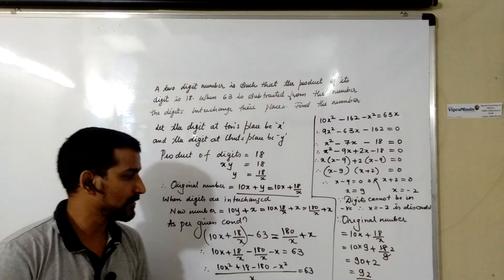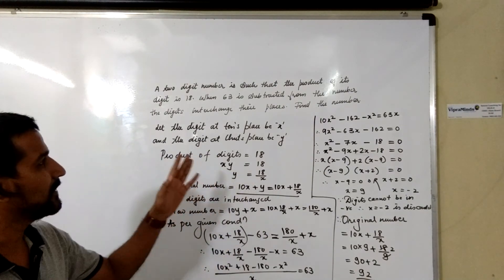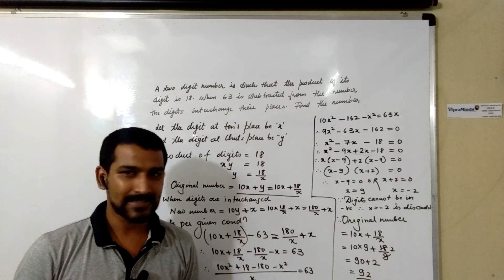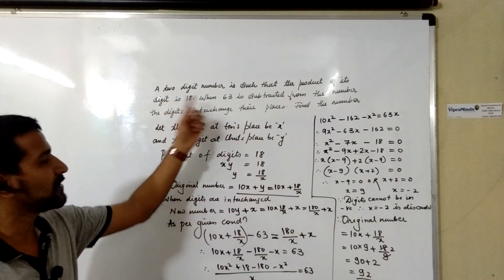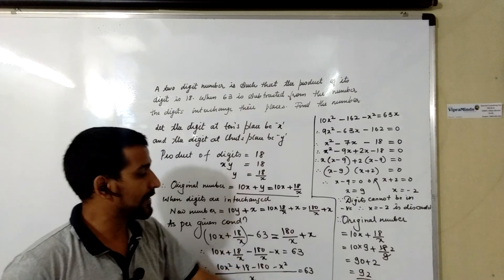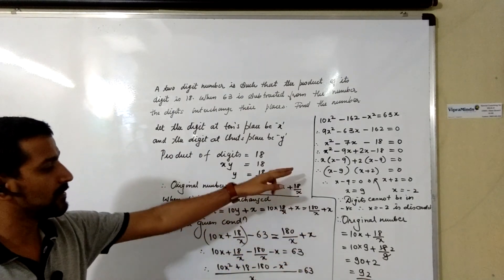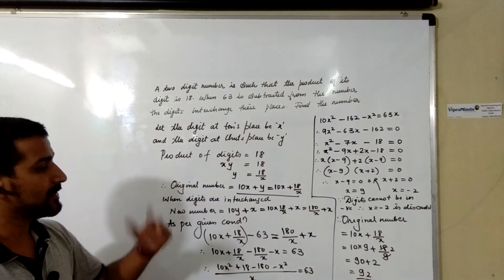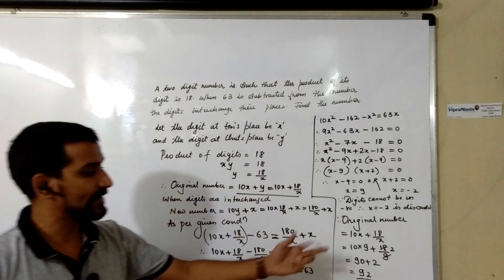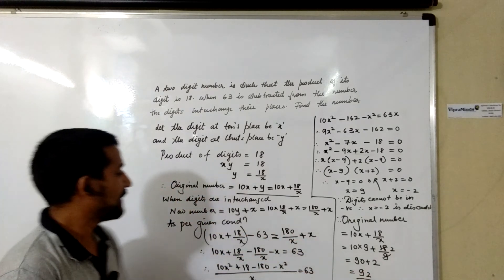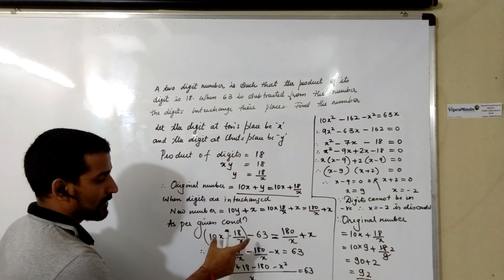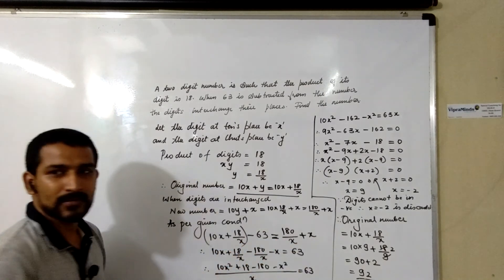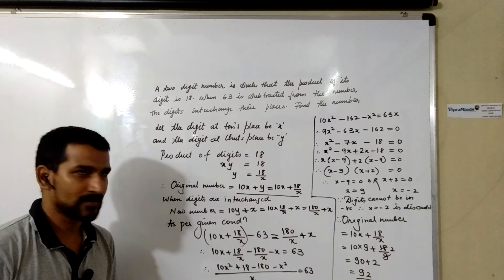This is the two-digit number that satisfies the conditions. The product of the digits: 9 × 2 = 18. If we subtract 63 from 92, we get 92 − 63 = 29, and indeed the digits are reversed.